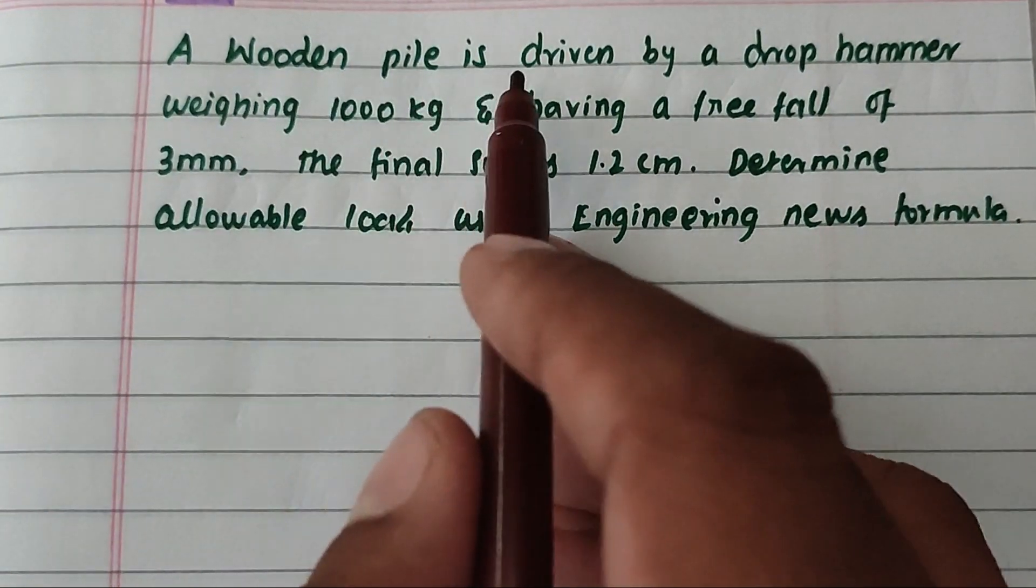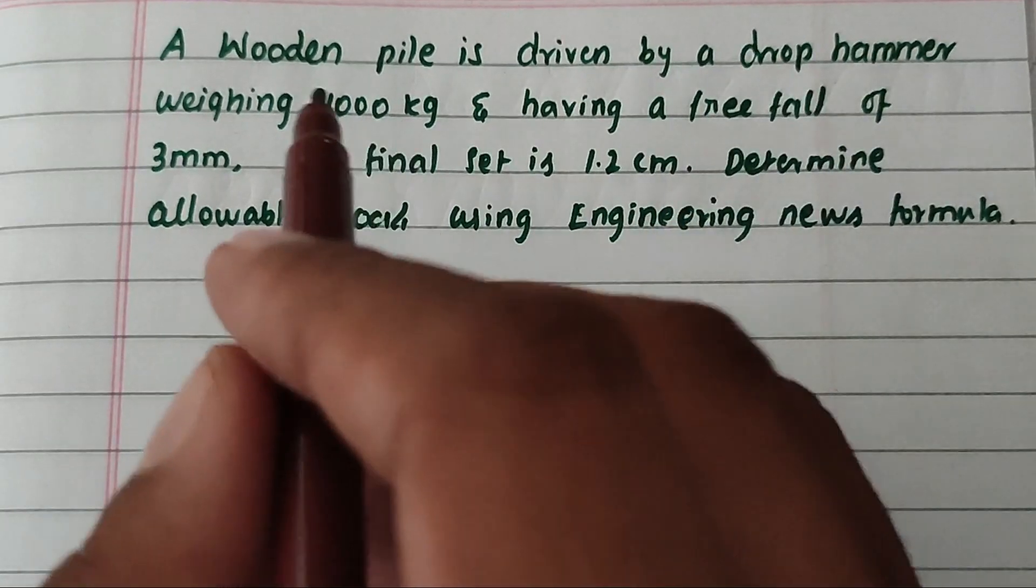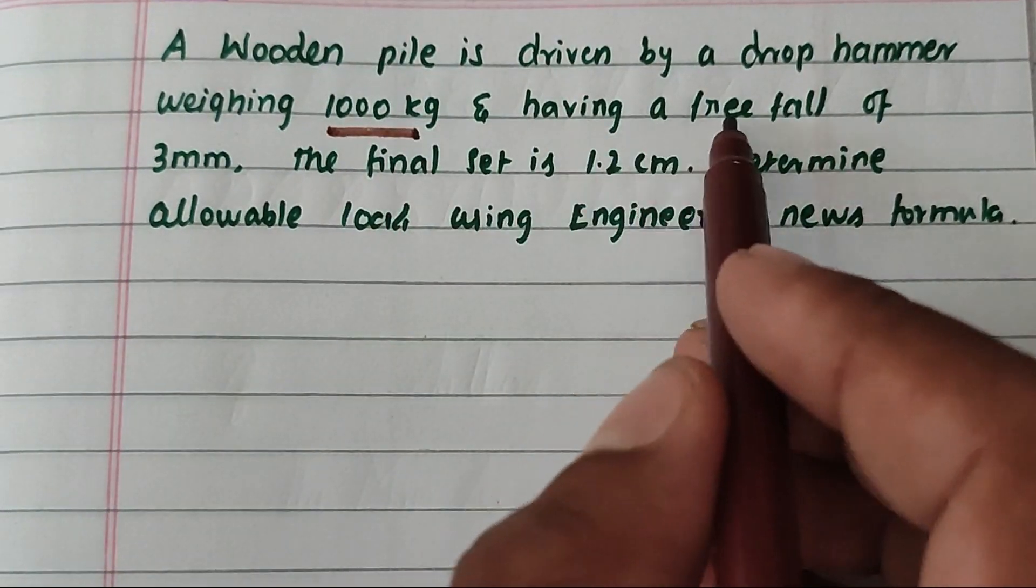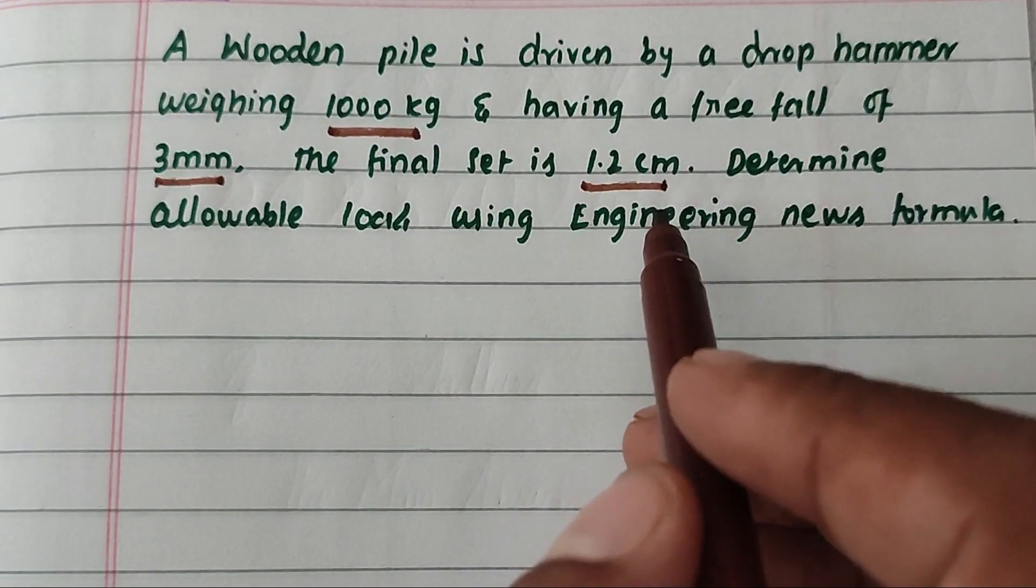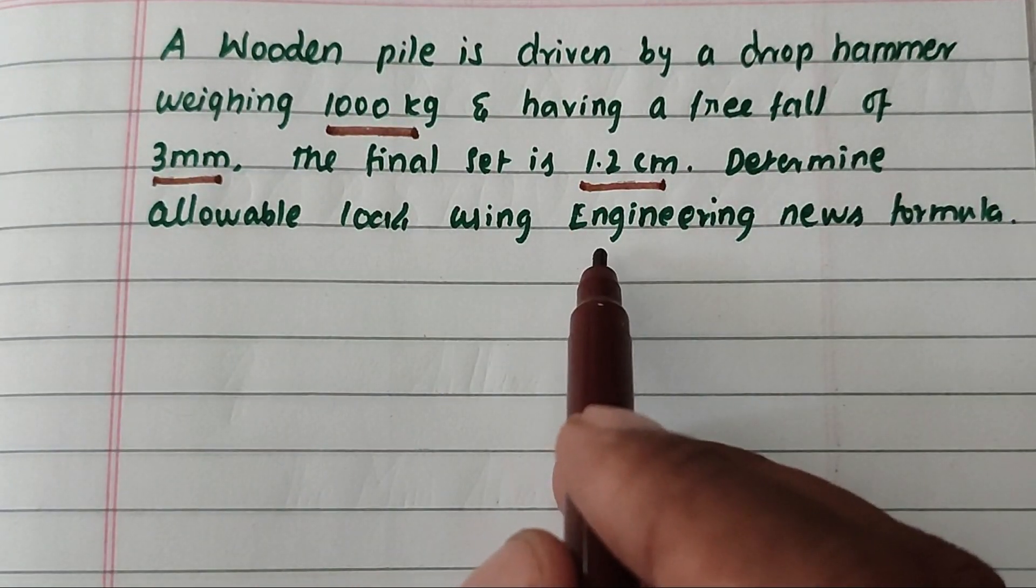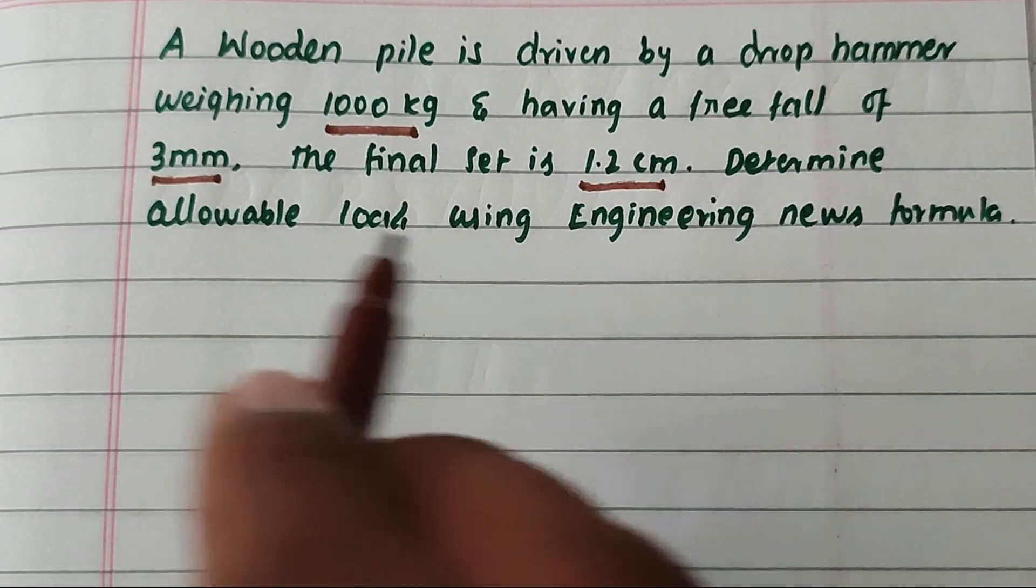The problem is: a wooden pile is driven by a drop hammer weighing 1000 kg, having a free fall of 3 meters. The final set is 1.2 cm. Determine the allowable load using engineering news formula.